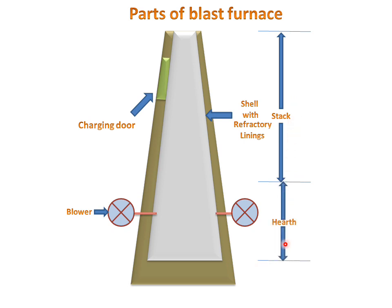The lower portion of the furnace is called hearth, also known as the well. There is a tap hole for collecting the molten metal, or collecting the pig iron, from the furnace.